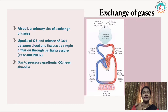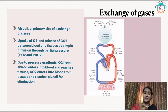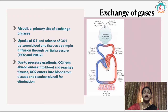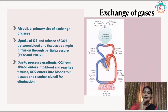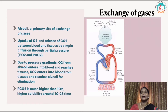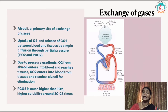The partial pressure of oxygen is pO2 and that of carbon dioxide is pCO2. Due to the pressure gradient, oxygen from the alveoli enters the blood in the capillaries that richly cover the alveoli, and reaches the tissues of the body. In return, carbon dioxide from the tissues enters the capillaries and reaches the alveoli for exhalation.